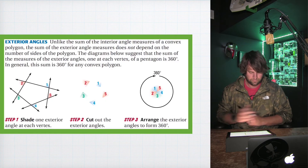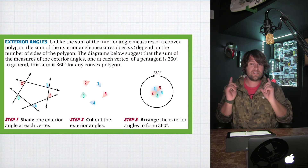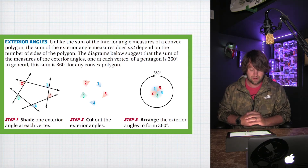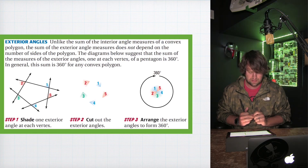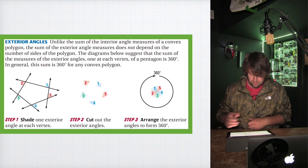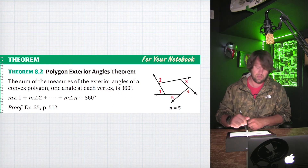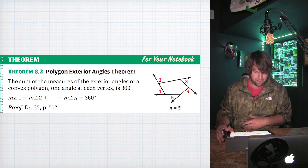We've been learning about the interior angles of polygons; now we're going to learn about exterior angles, which is so much easier. Unlike the sum of interior angle measures, the sum of the exterior angle measures does not depend on the number of sides of the polygon. Theorem 8.2: the sum of the measures of the exterior angles of a convex polygon, one angle at each vertex, is always 360 degrees — no matter what polygon it is.